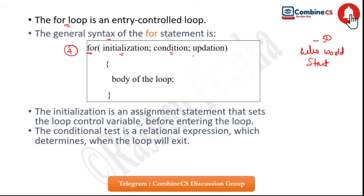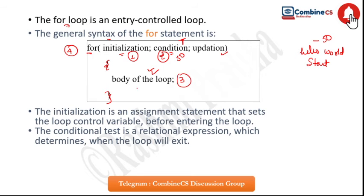Every time the loop runs, we check a condition. The execution of the loop goes like this: first, the initialization takes place. Then the condition from the loop is checked. If the condition is true, then only the body of the loop executes. If the condition is false, the loop exits and program control moves to the next statement.